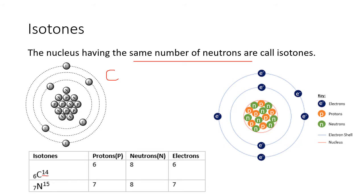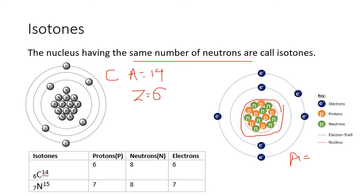Carbon-14 has a mass number of 14 and six protons. For nitrogen-15, the mass number is 15 and it has seven protons.